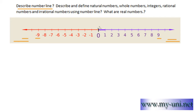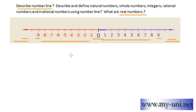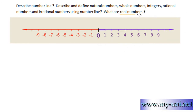The number line has points, and these points represent real numbers. A real number is any number that you can think of that can be represented on a number line. It can be a fraction, a decimal fraction, or any number — if it can be placed on a number line, it is a real number.